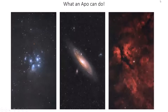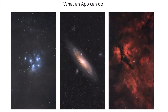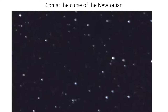Makers like TeleVue, Stellarview, Explore Scientific, and Takahashi are renowned for their apochromatic scopes, especially for astrophotography. This is what a good apo can do at its best. When looking through a quality apochromatic on a good night, you literally see the stars as diamonds on black velvet — crystal-clear, sharp images with no false color.